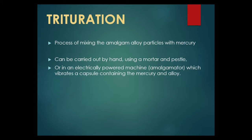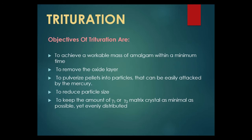Trituration is a process of mixing the amalgam alloy particles with mercury. It can be carried out by hand using a mortar and pestle, or in an electrically powered machine called an amalgamator, which vibrates a capsule containing the mercury and alloy. Objectives of trituration are to achieve a workable mass of amalgam within minimum time, to remove the oxide layer, to pulverize pellets into particles easily attacked by mercury, and to reduce particle size to keep gamma-1 or gamma-2 matrix crystals as minimal as possible yet evenly distributed.